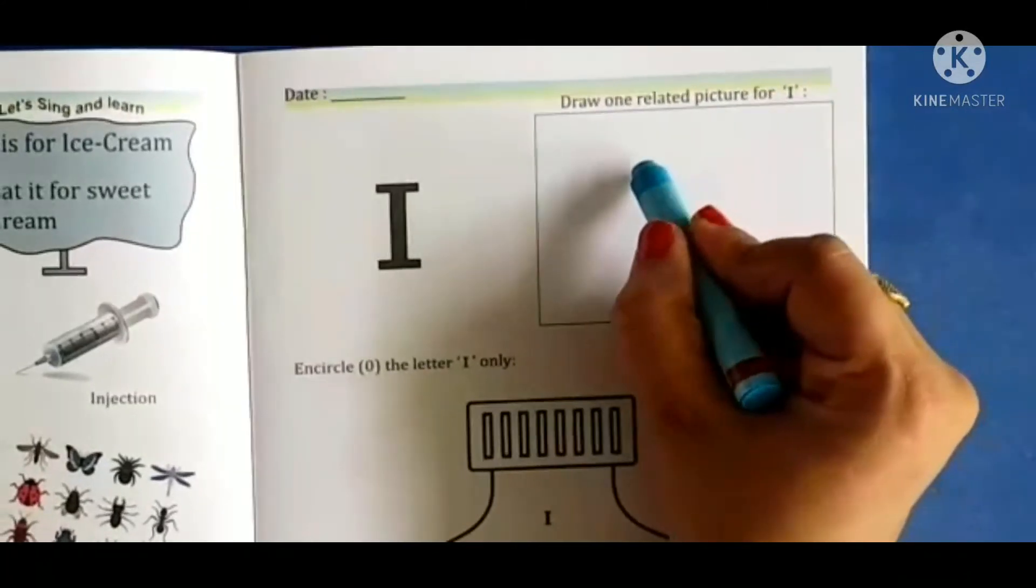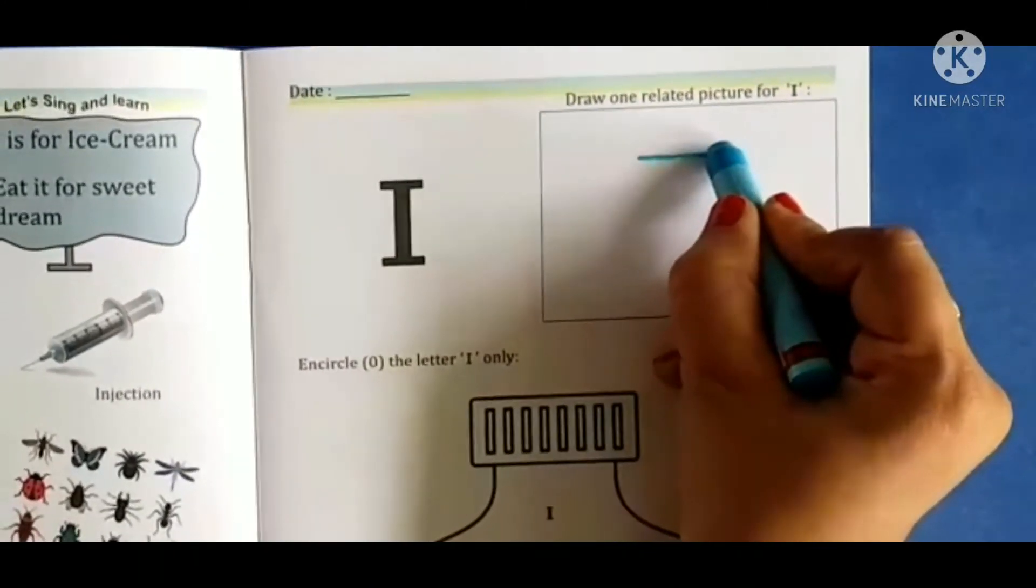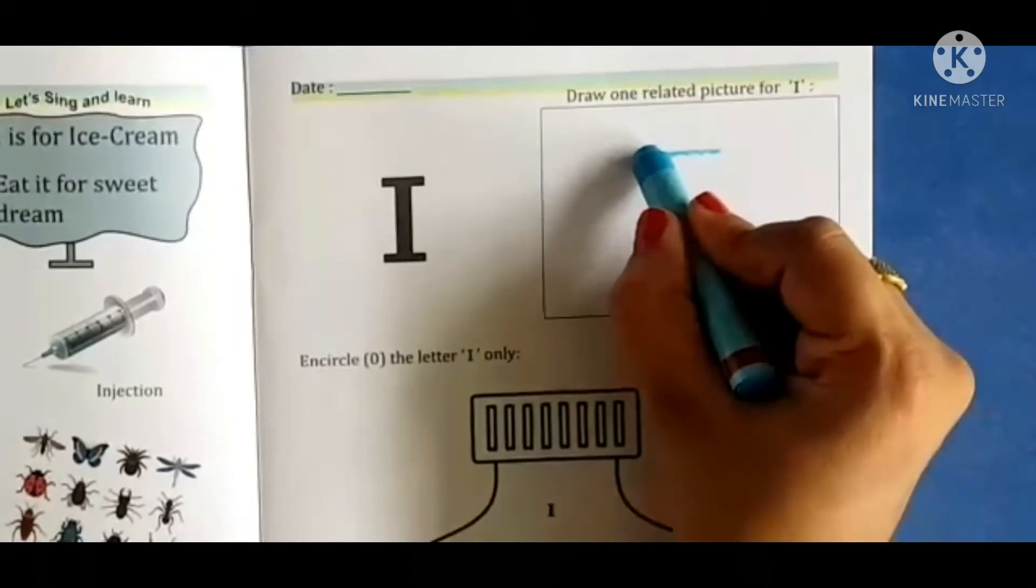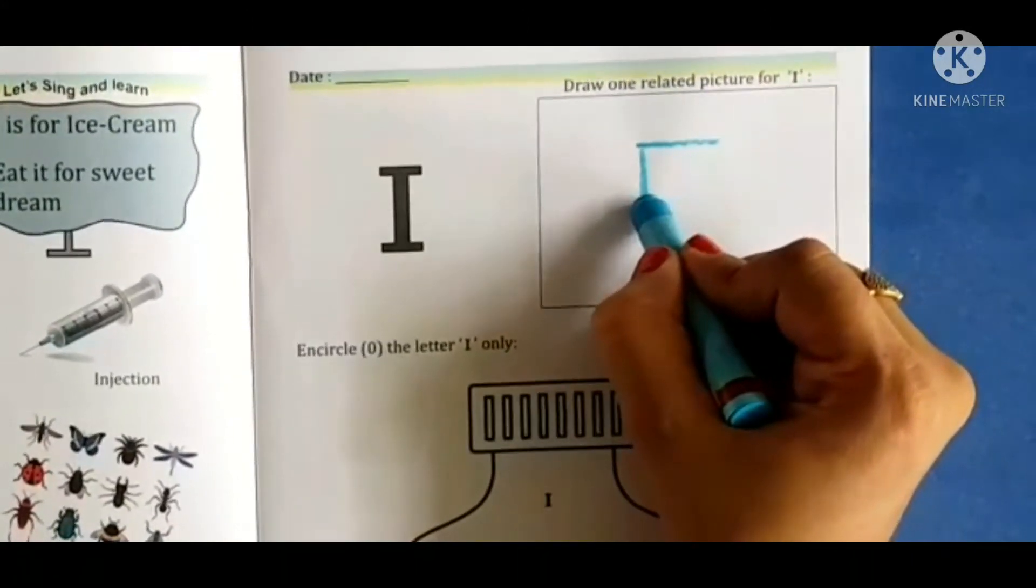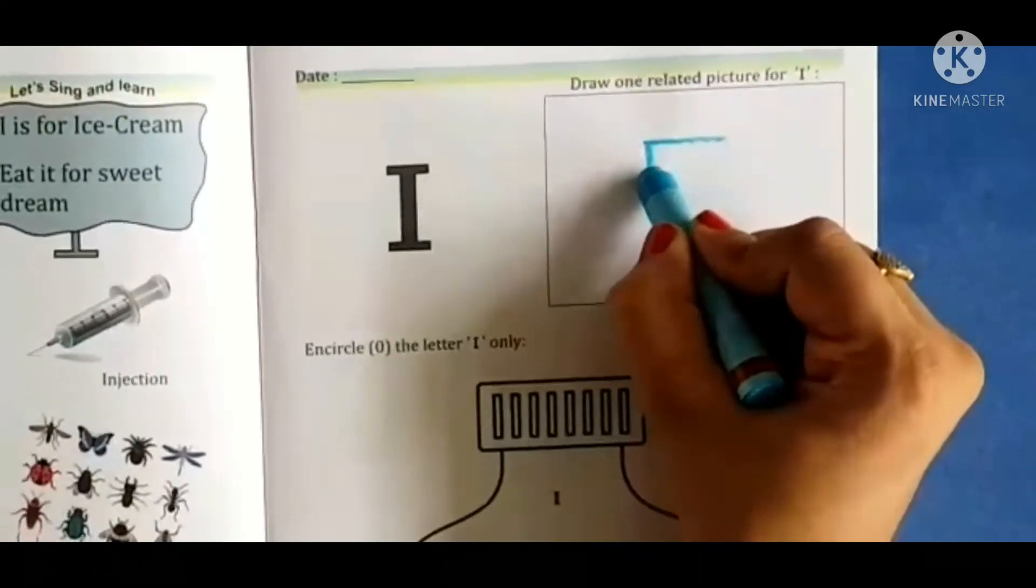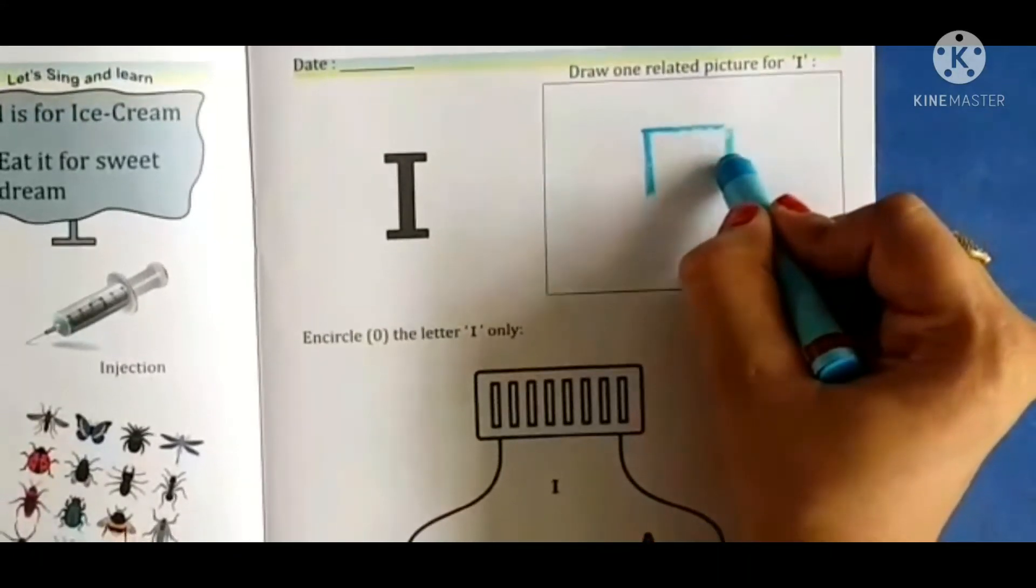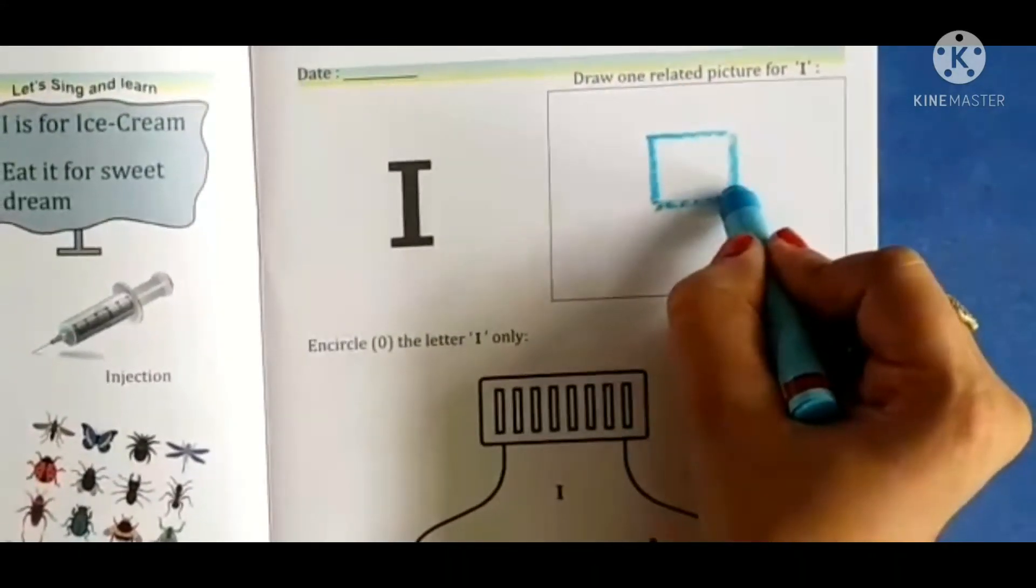And for that we will take sky blue color. Ice cube banane ke liye hum sabse pehle we will make sleeping line. Hamein ek square banane ke liye hum sleeping line karenge, standing line karenge. We will draw one more standing line.